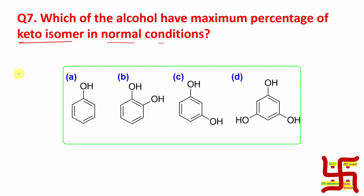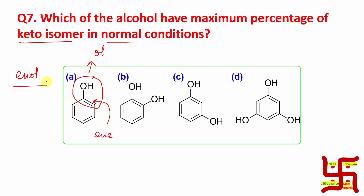What I have written here is the enol form. Enol means this double bond is present, and 'ol' refers to the alcohol OH group. So when a C=C double bond and an OH are both present in a molecule, it is called enol. Now, phenol remains in this enol form — I agree with that.